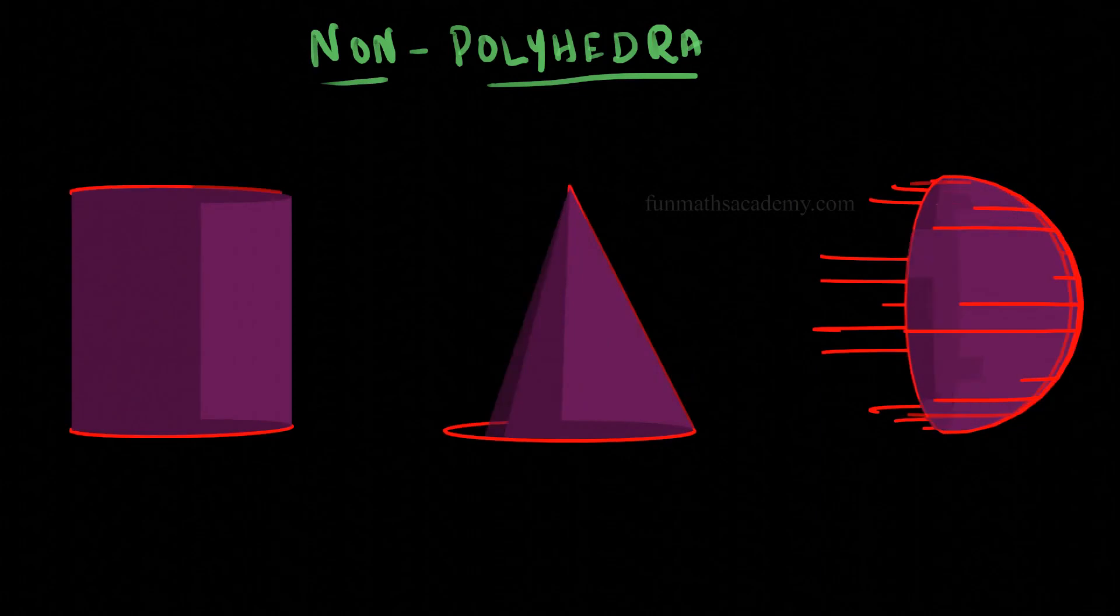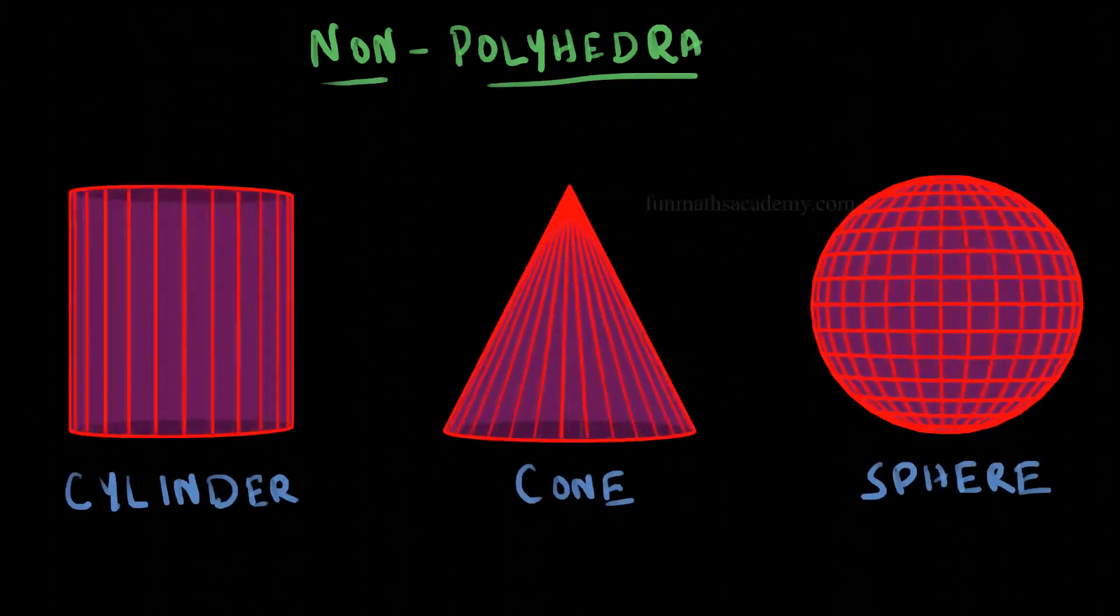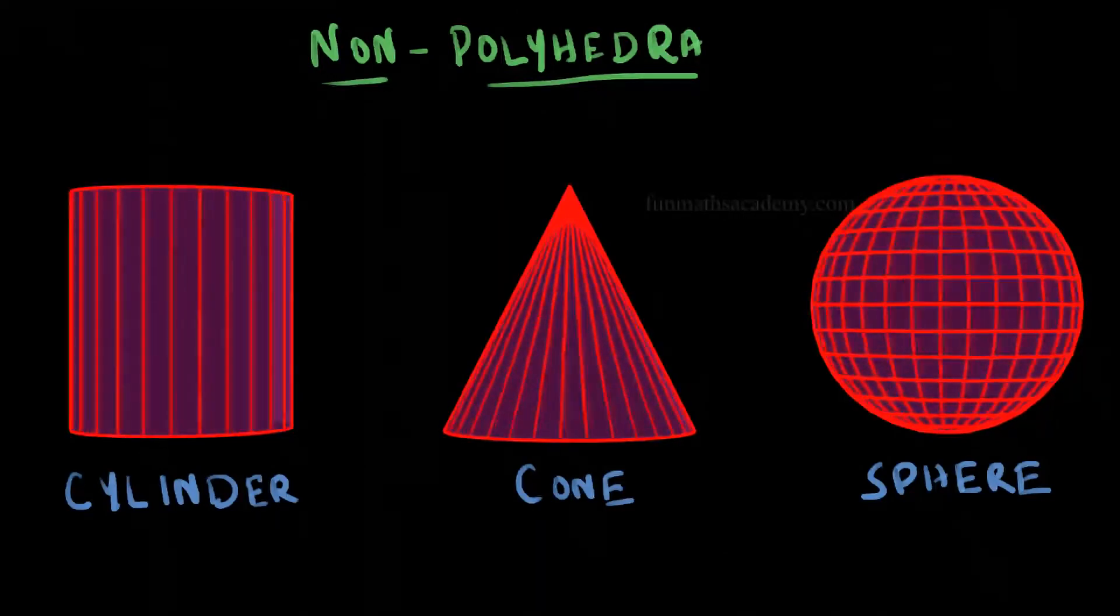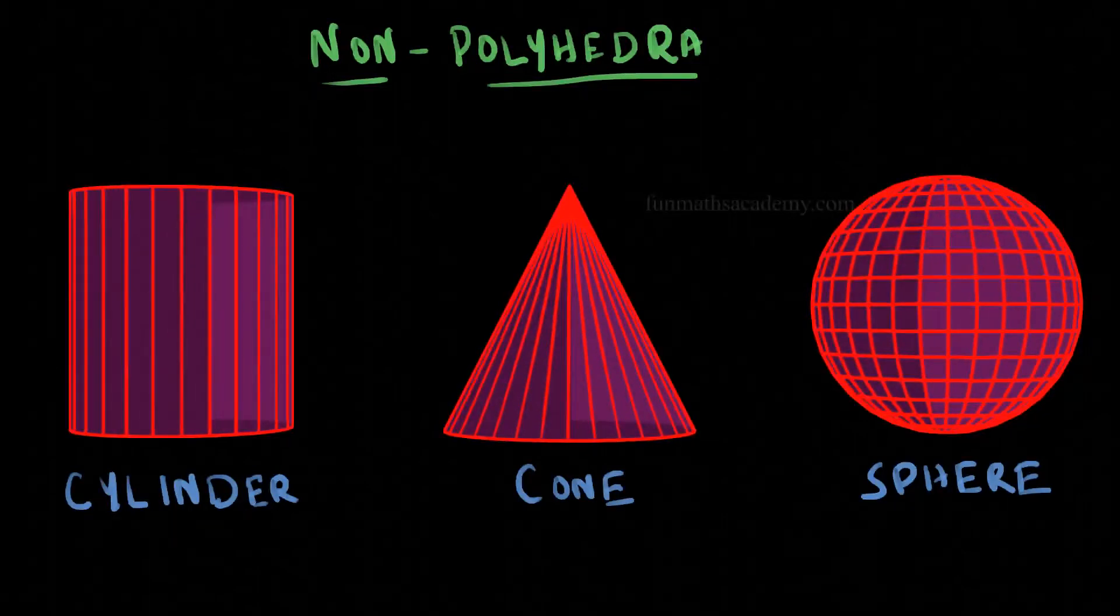3D shapes like cylinder, cone, and sphere cannot be examples of polyhedron because a polyhedron can have only flat faces. But these shapes have curved faces. That is why these will be examples of non-polyhedron.